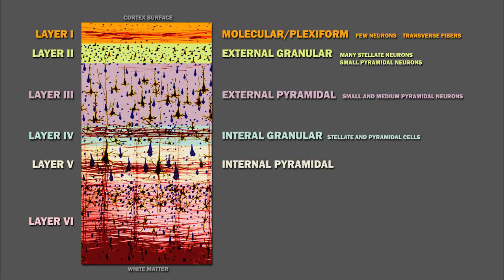Layer 5 is called the internal pyramidal layer and features scattered Betz cells, which, again, are large pyramidal cells.